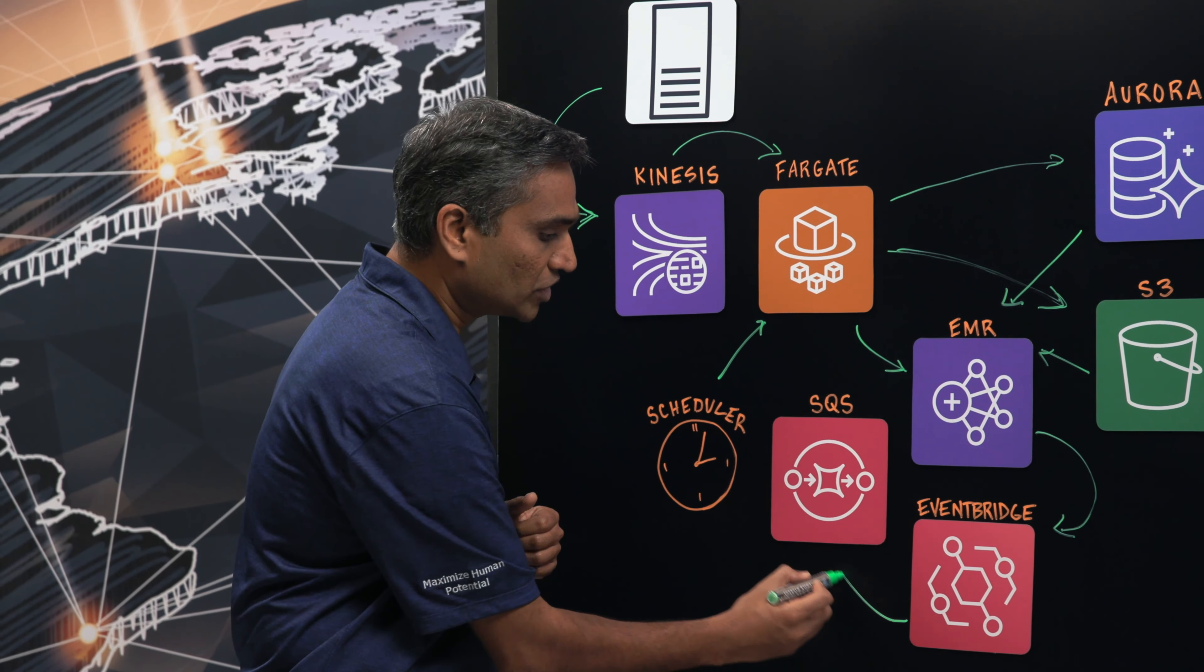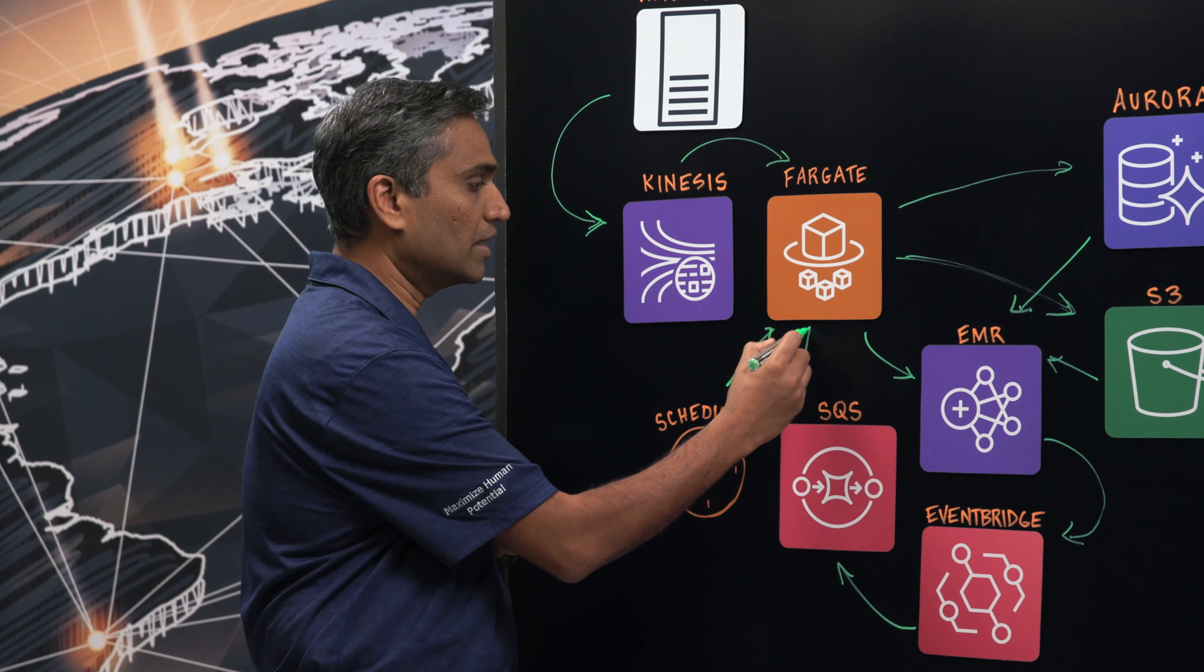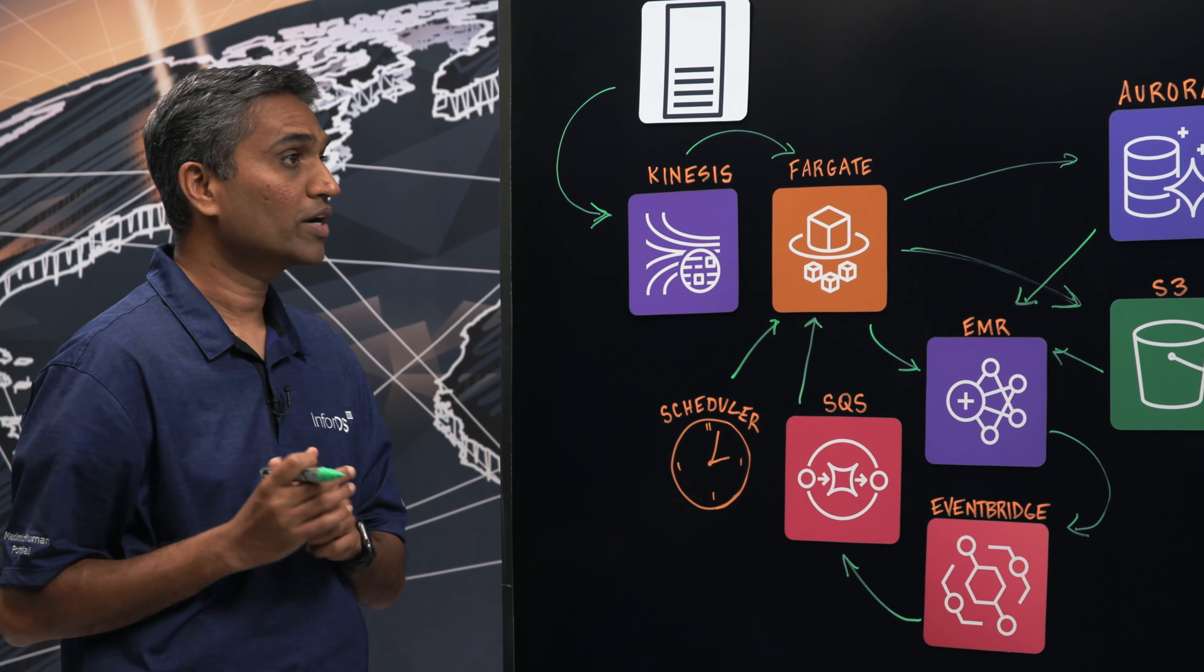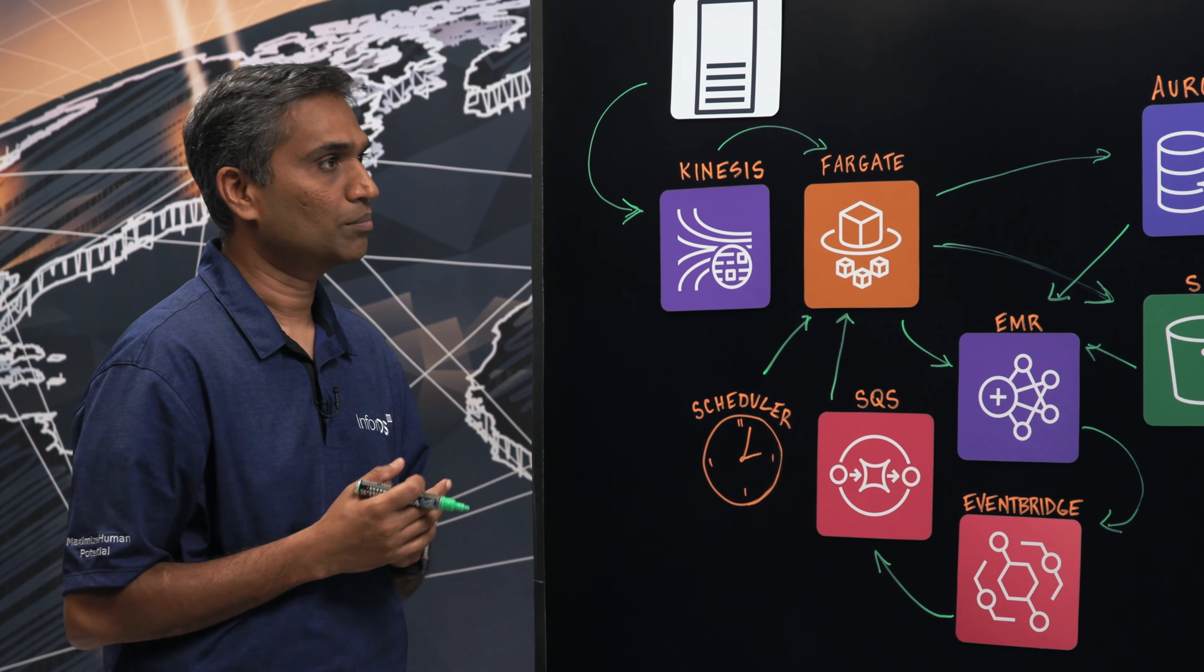And from the event bridge, we send an SQS message. And from the SQS message, the data is read from services running on Fargate to process the data, to decorate those violations, and to send emails to our customers through SMTP server.